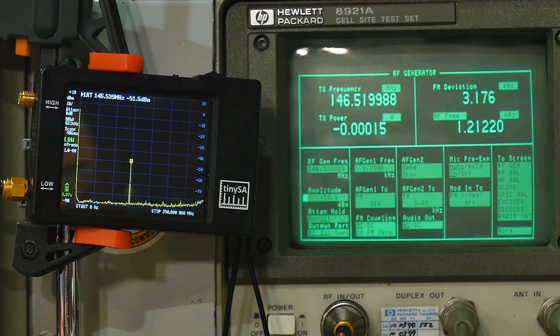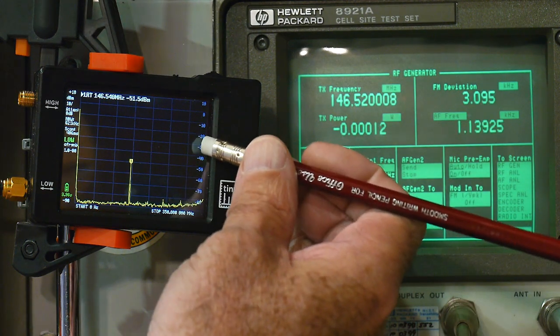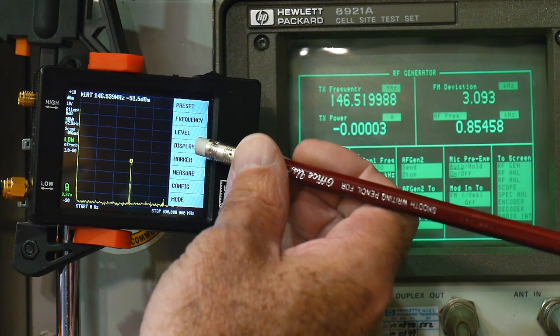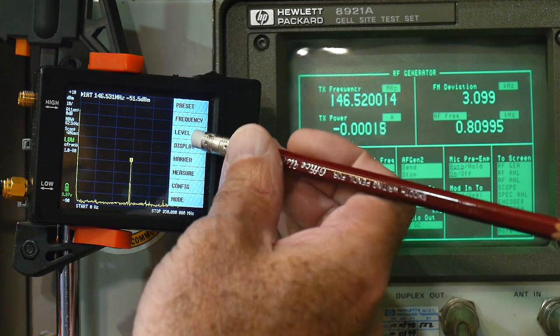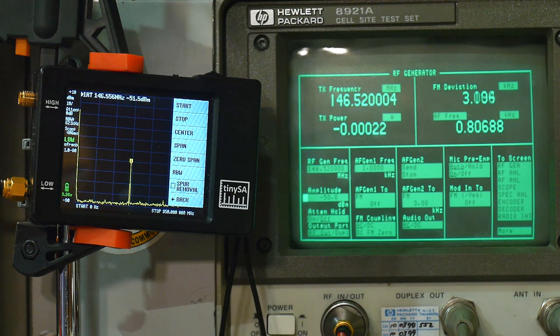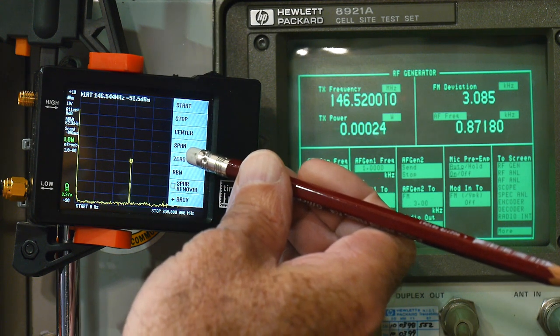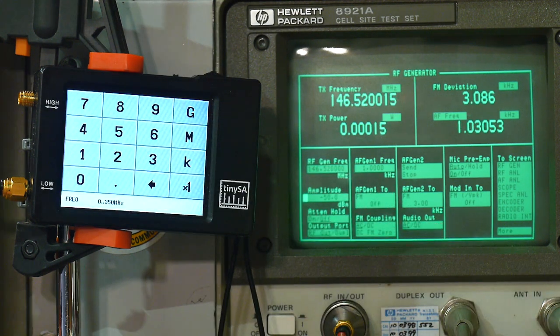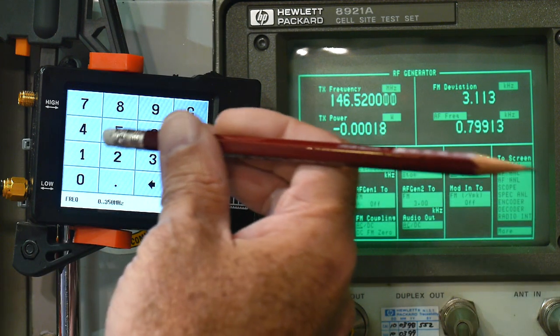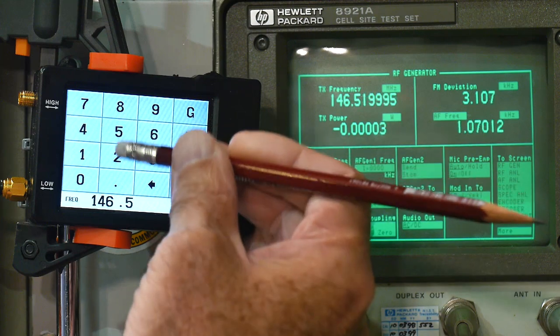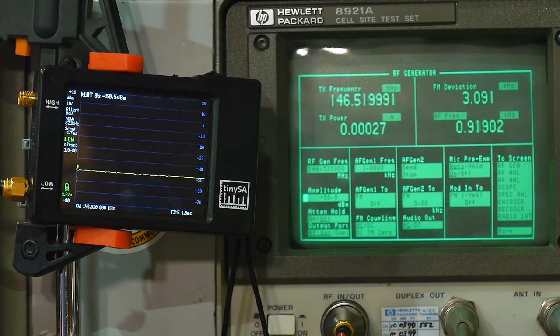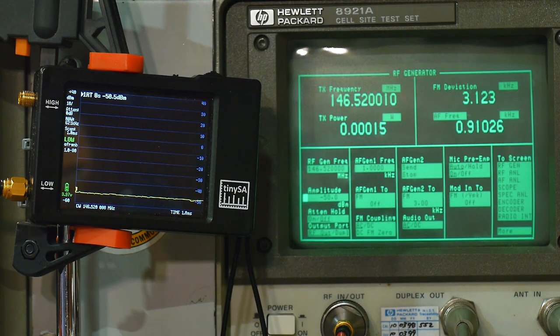So we want to do a zero span on that frequency. So how do we do that? We go to frequency, and there's a button here called zero span. So we'll click on zero span. It asks us for the frequency. We're at 146.52 megahertz. And there we go.